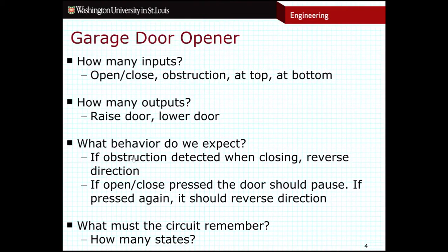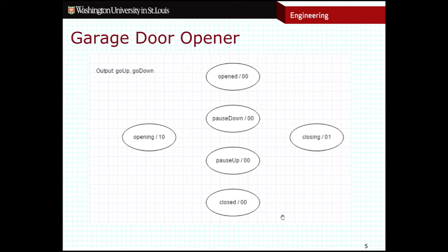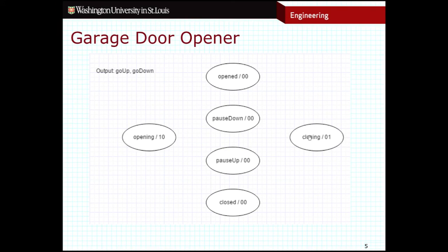In terms of behavior, we see clearly defined behavior for obstructions as well as the pausing behavior I expect for the door. In terms of what we remember, I believe there are six states that we need. We've got open and closed at the very top and bottom. Since when pausing the garage door we need to remember what direction it was headed in so that when we push the button again it goes in the reverse direction, there are two states for pausing. And then two additional states for whether the door is currently opening or currently closing.